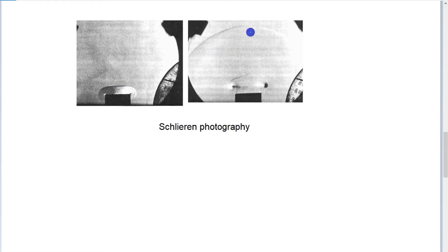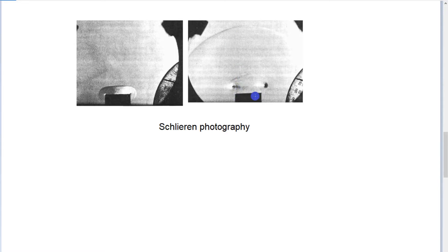Schlieren photography basically shows any density changes in the air through light refraction. Here is the exhaust pipe where the compression wave exits. Later, the compression wave — sonic wave, acoustic wave — out here, and here is the appearance of the gas. So here's the acoustic wave ahead of the gas coming out into the open. Now you can visualize that process, and remember that when that acoustic wave comes out, an expansion wave reflects backwards up to the port.